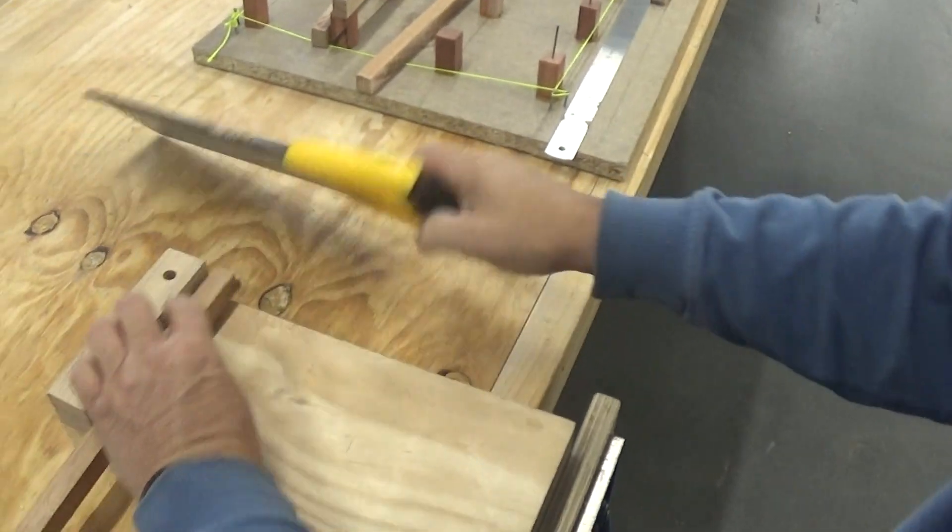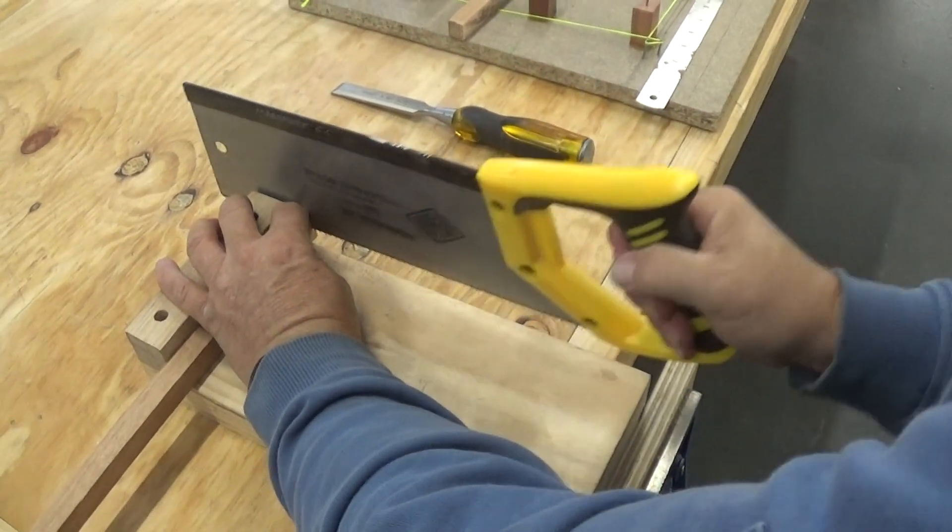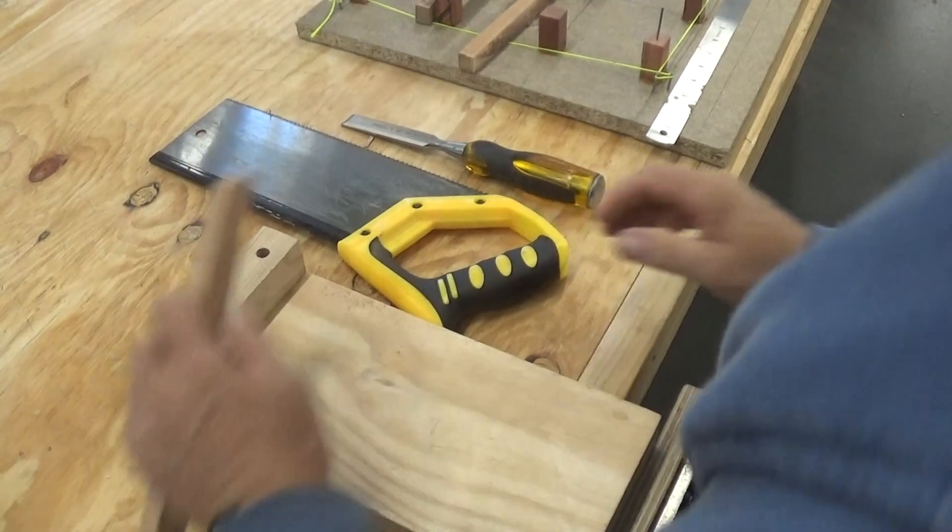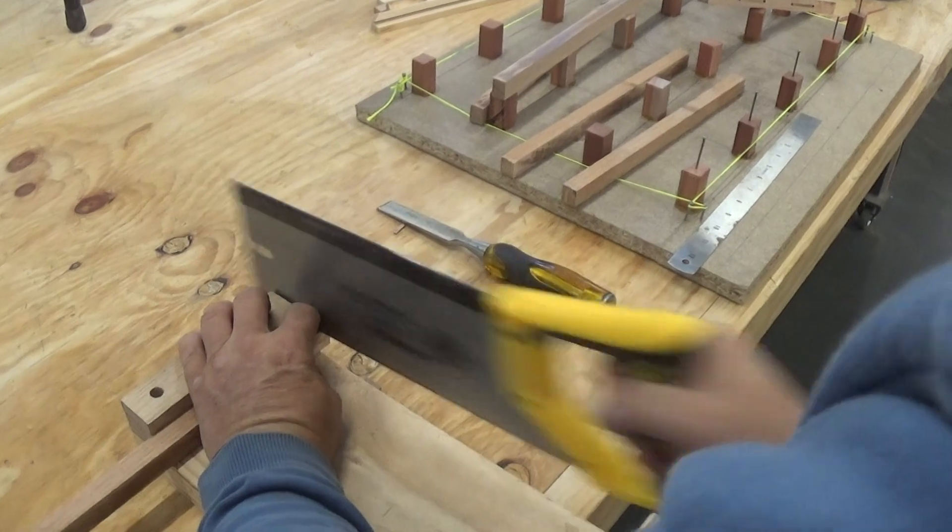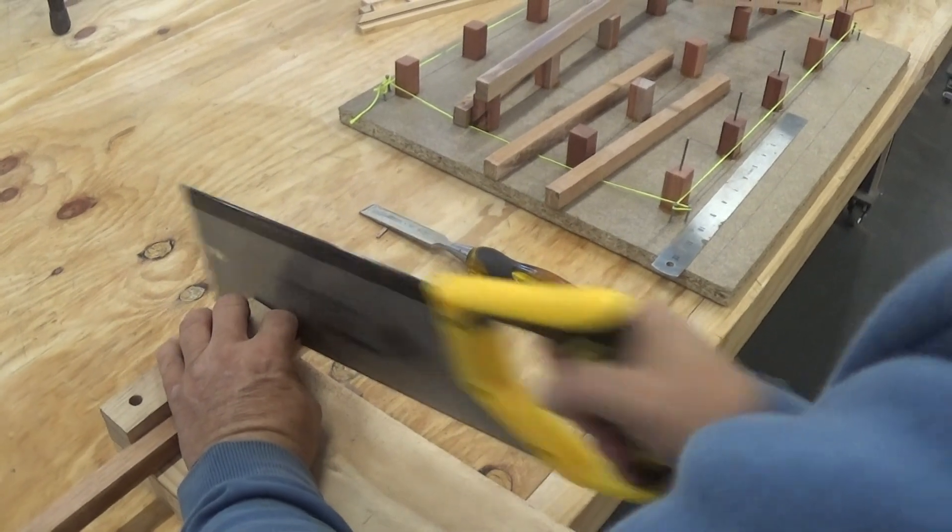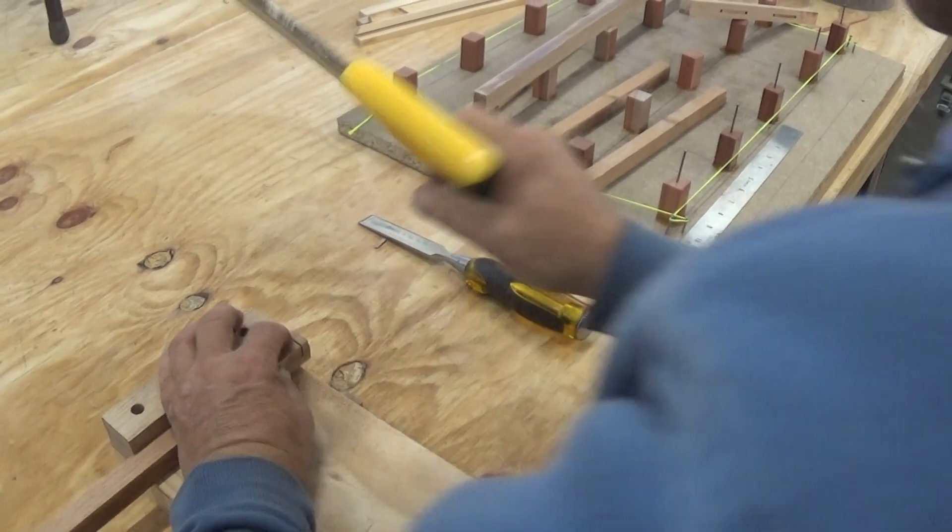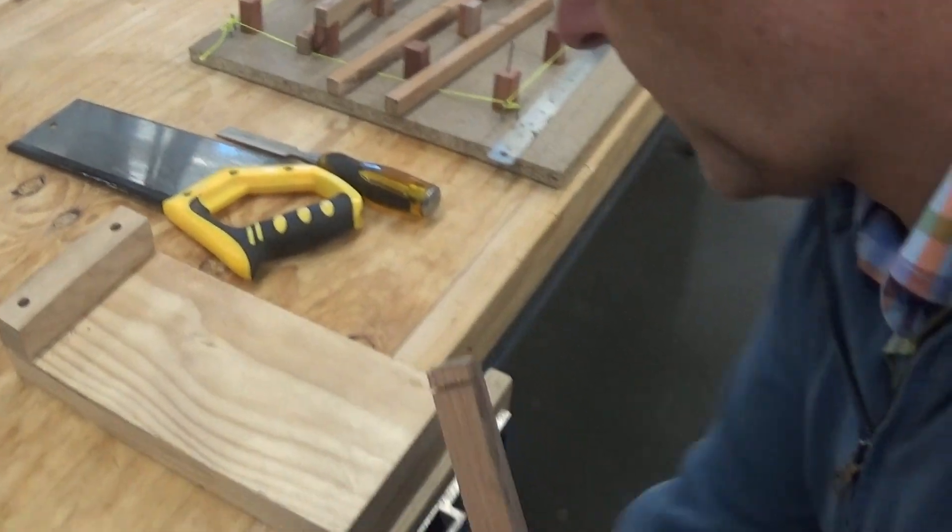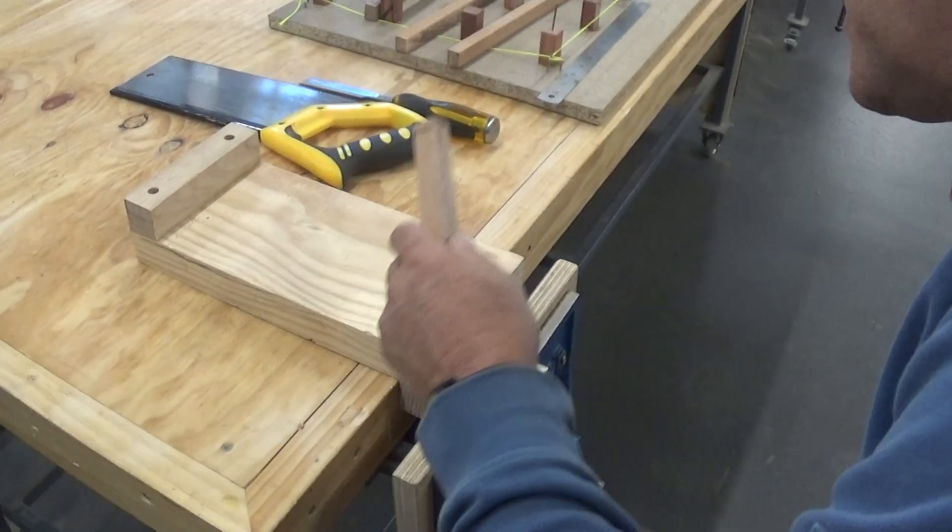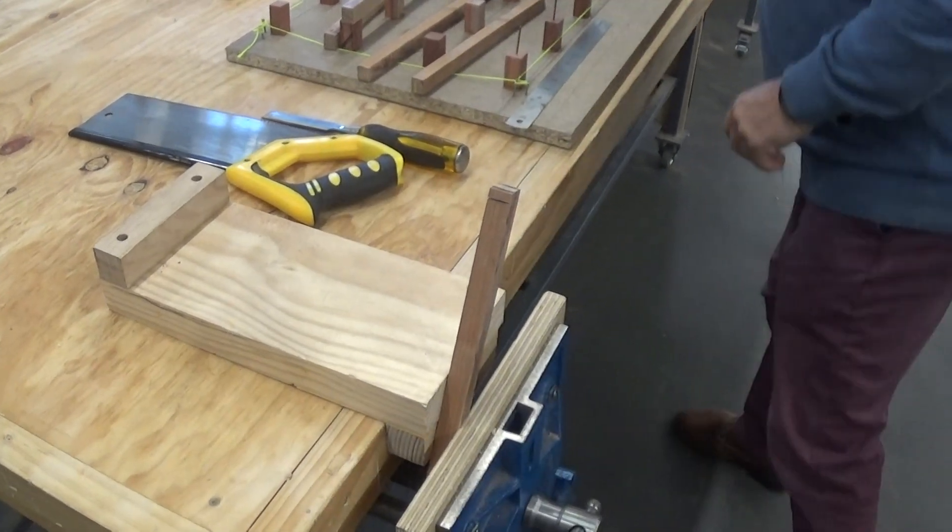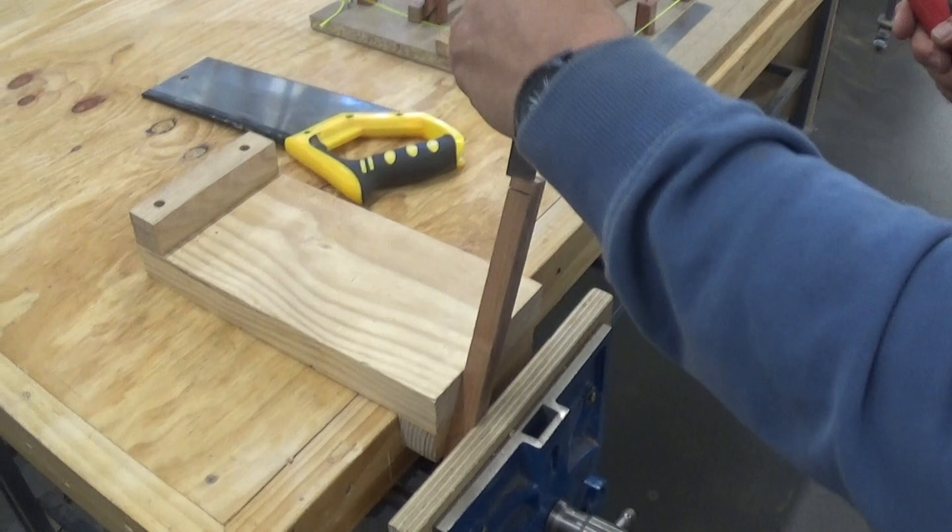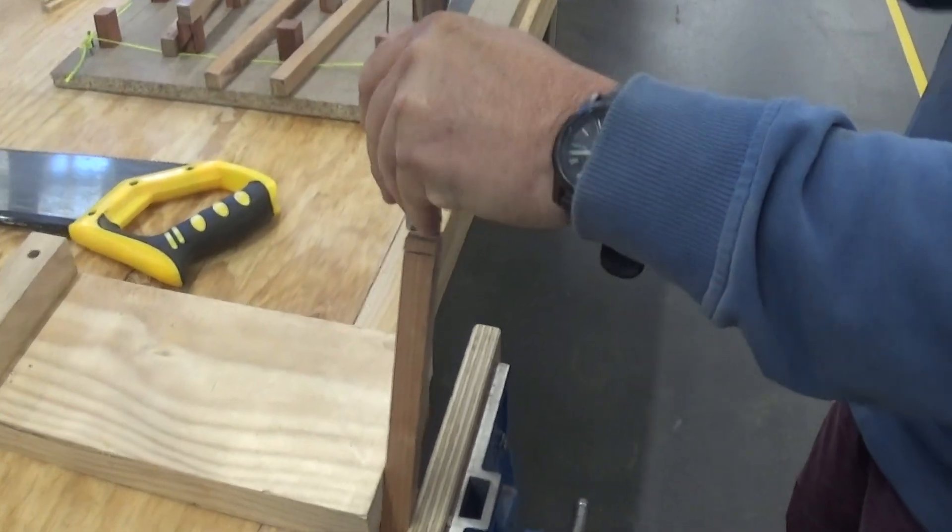It should be able to snap off. It might go a little bit further. And the same with this one, down halfway. If it doesn't come off, you're going to have to use the chisel. It should just pop off nicely.